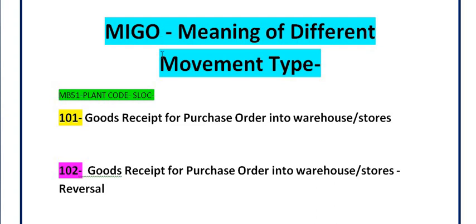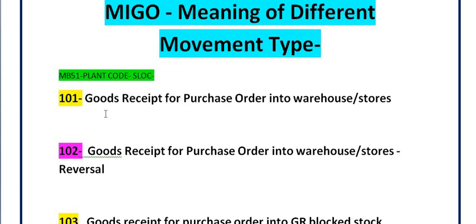The most frequently used transaction code is MIGO in the SAP MM module. The most important movement type is 101. Once we place a purchase order against a vendor and the vendor supplies the material to the respective consignee or plant, movement type 101 is used as a goods receipt for purchase order. In MIGO, you select movement type 101 and 'goods receipt against purchase order' in the dropdown. Generally 99.99% of stock entering our warehouse uses this movement type.